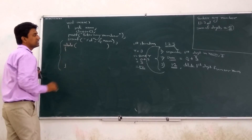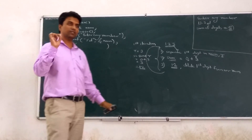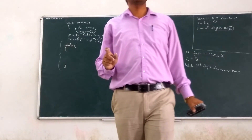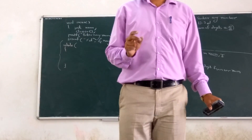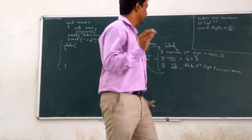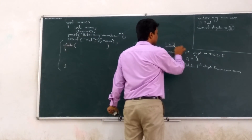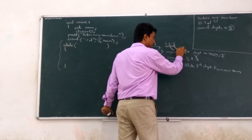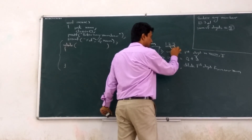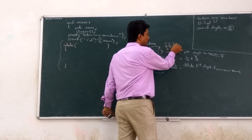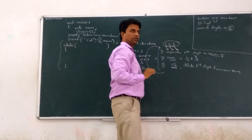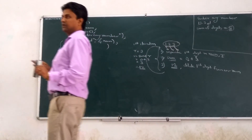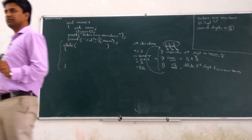What is the first step? Separate the first digit from the number. This is the number — this is the first digit, this is the second digit, this is the third digit. In a given number, all are digits of that number. So convert. Logic is now clear.